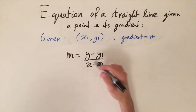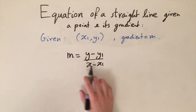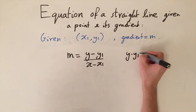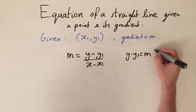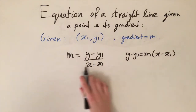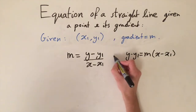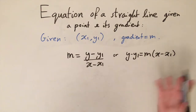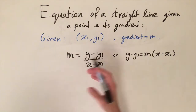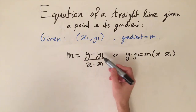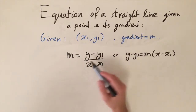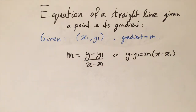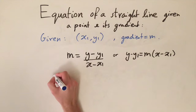If we rearrange this, we can find the equation of the line. Another form we can write this in is y minus y1 equals m times x minus x1, by multiplying the denominator up. These are both equivalent formulas. I personally prefer the first form because it reinforces that m is just the change in y divided by the change in x, with one of the points replaced by the variables x and y.